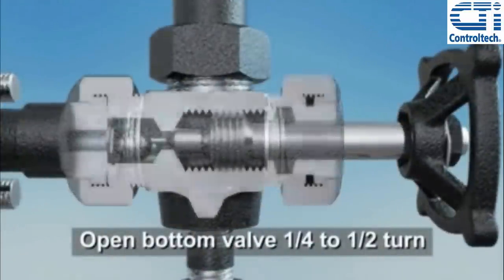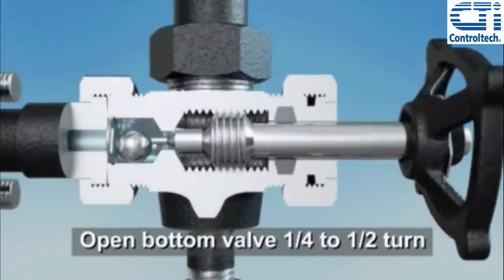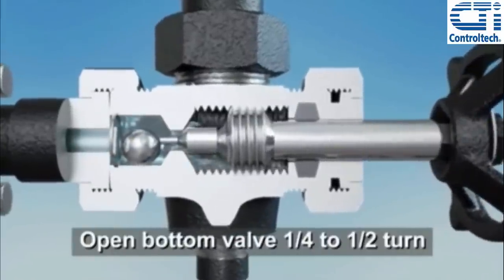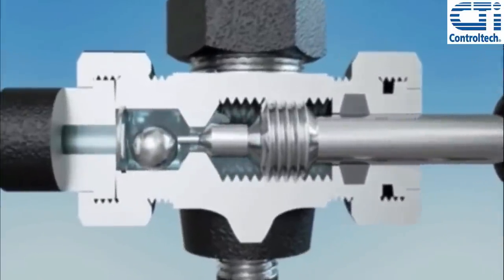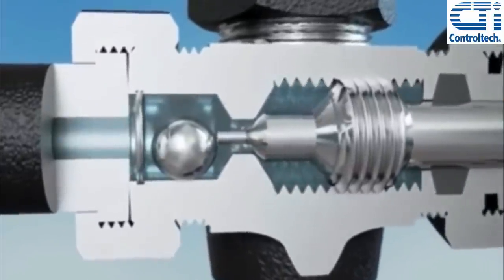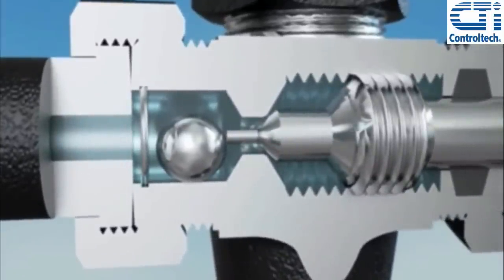Next, open the bottom valve one quarter to one half turn to allow liquid to flow into the gauge. Notice how only slightly opening the valve keeps the stem tip in contact with the ball check. The importance of this will be explained shortly.